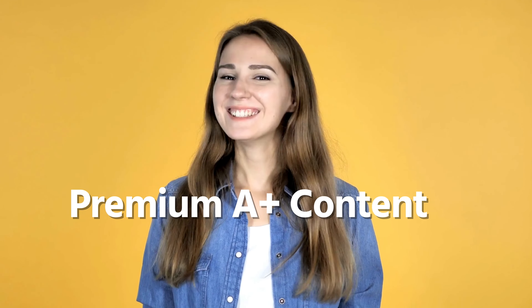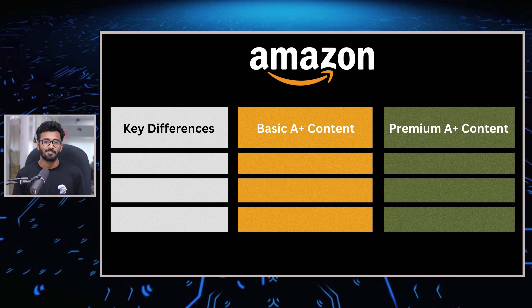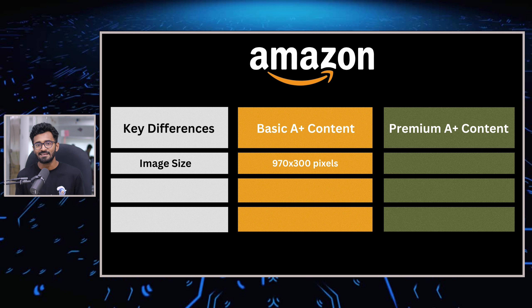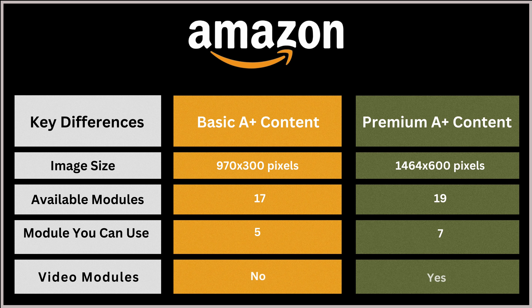So which one should you use? Obviously, premium A plus content — if you are eligible. Now let's look at the key differences. One big difference is the image size: basic A plus content allows 973 x 300 pixels, whereas premium A plus content accepts 1464 x 600 pixels. Also, you can add up to 7 modules from a total of 19 module selections on premium A plus content, but you are limited to 5 modules out of 17 available in basic A plus content. Most importantly, you can only add videos in premium A plus content — there is no such option in basic. Here is a glance at all the differences — pause the video for a clear view.